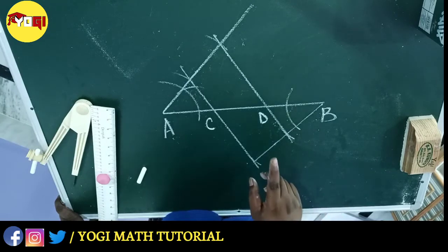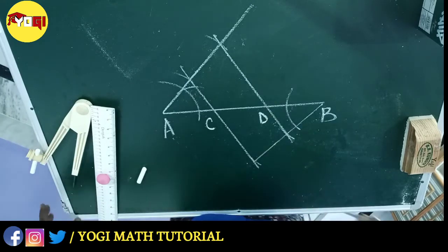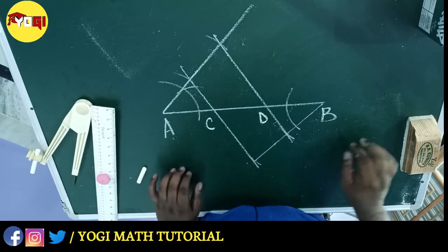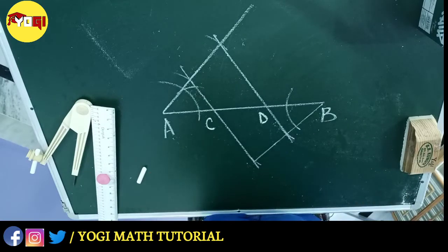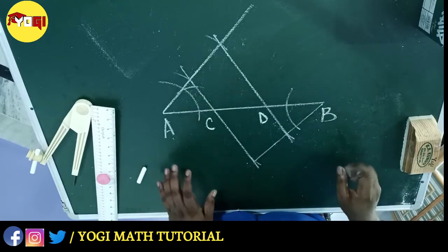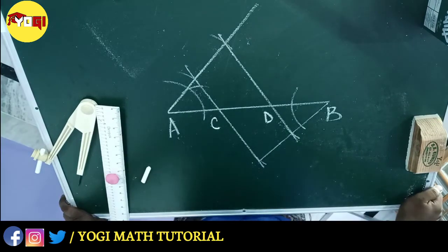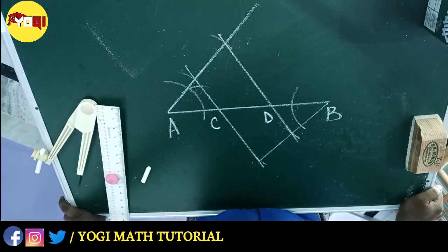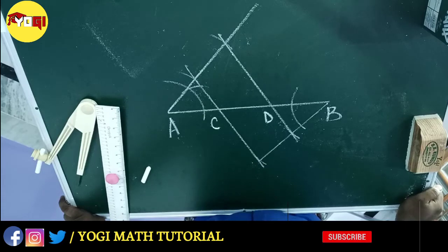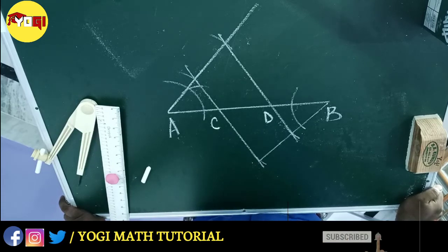This is the universal process by which we can bisect, trisect, or divide a line segment into four equal parts, five equal parts, very easily. Many thanks for watching this video. Please like and share this video, and do subscribe to the channel for upcoming new videos.